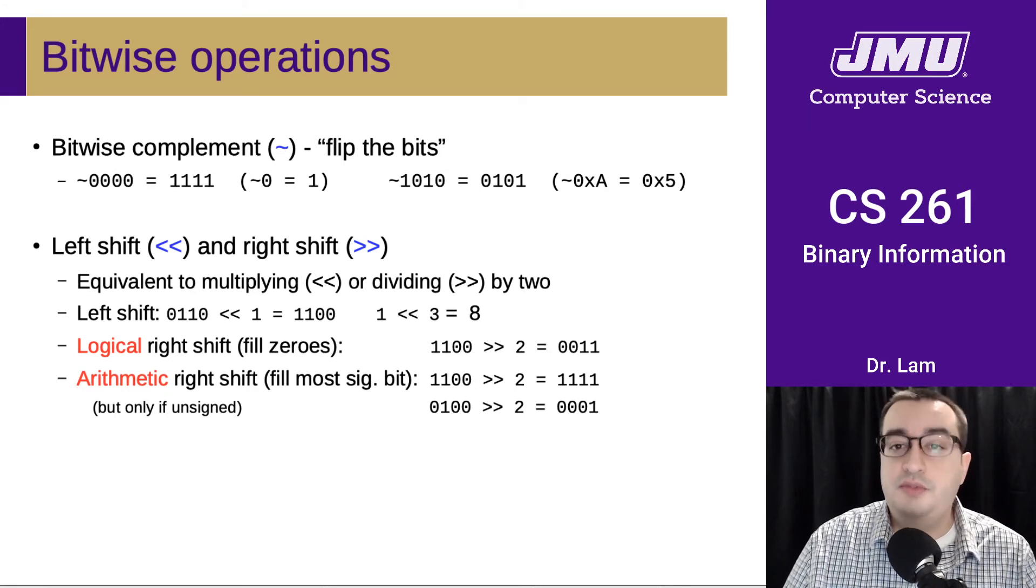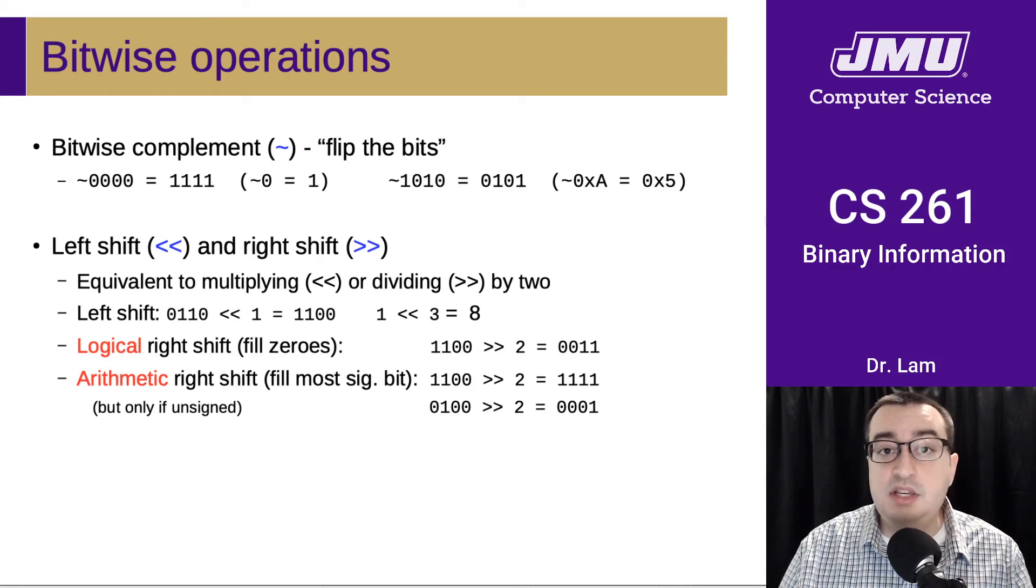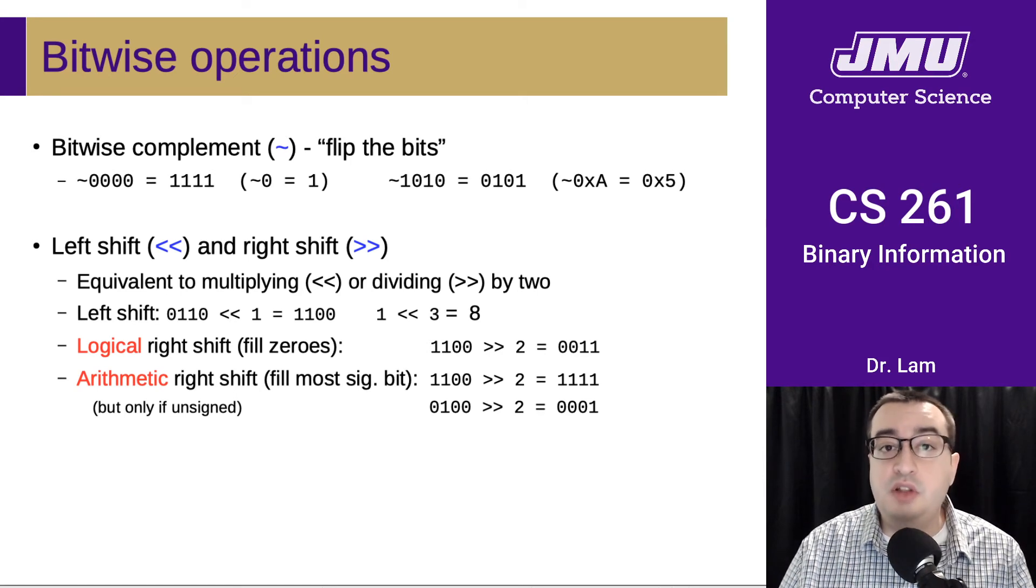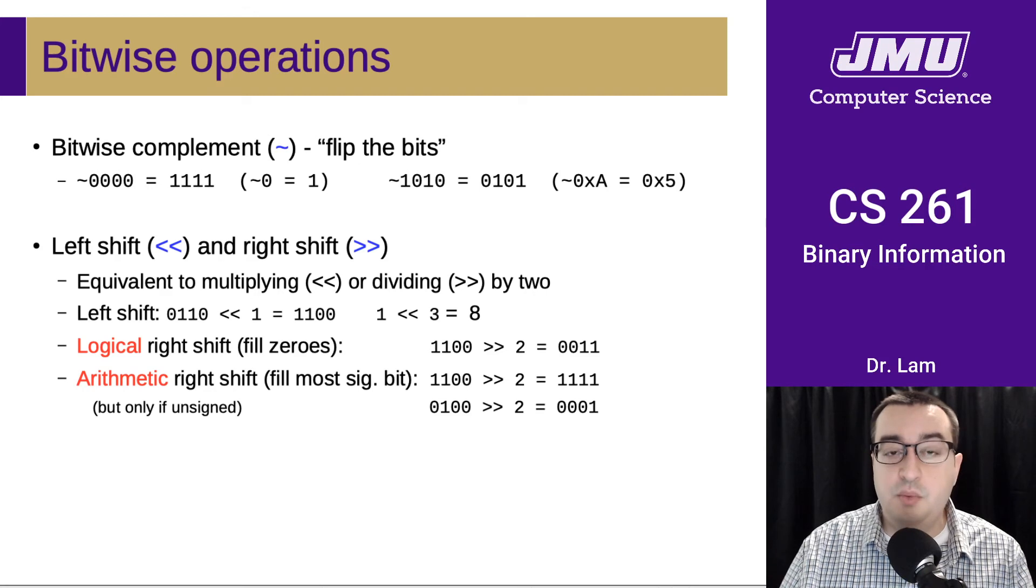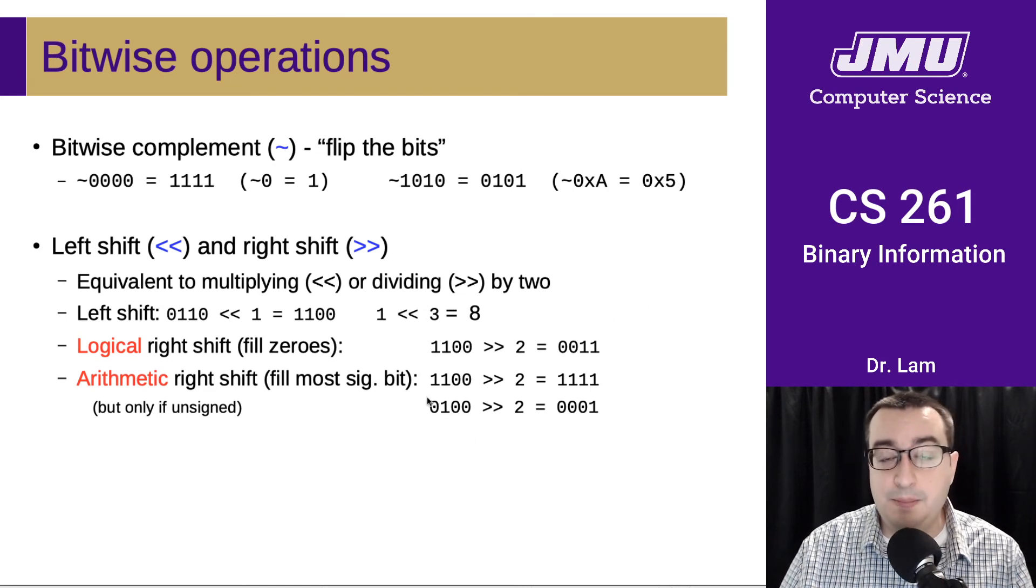The usefulness of these will become apparent once we start talking about integer representations. There is a logical right shift and an arithmetic right shift. The difference is that when you're filling in digits on the left-hand side because you've shifted digits to the right, if you're doing a logical right shift, you always fill those spots with zero. In an arithmetic right shift, you fill with either zero or one, depending on what the first digit was in the original number.